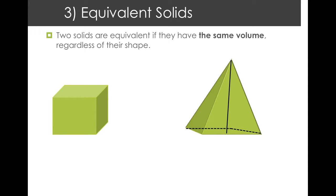Here are two solids — you should recognize them. This is a cube and this is a pyramid. The measurements of the cube are given: the length, width, and height are all the same because a cube has equal dimensions — it's 2 centimeters. This is a square base pyramid, and the base is 2 centimeters across and in length, and it is 6 centimeters high.